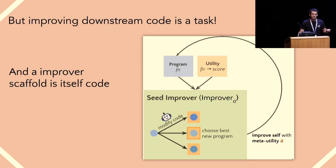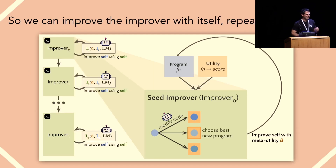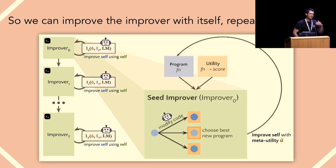Then you can take the improved improver and improve that improved improver repeatedly. As a result, you can basically take improvers that improve improvers and improve the improved improvers with improved improvers.